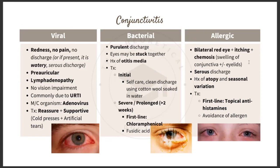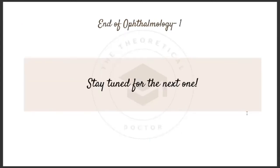Allergic conjunctivitis is bilateral, as it is due to allergies affecting both eyes. Features include itching, chemosis (swelling of the conjunctiva with or without the eyelids), and serous discharge. The patient may have a history of atopy and seasonal variation — ask about asthma and allergic rhinitis. Treatment is topical antihistamines and avoidance of allergens such as dust and carpets.